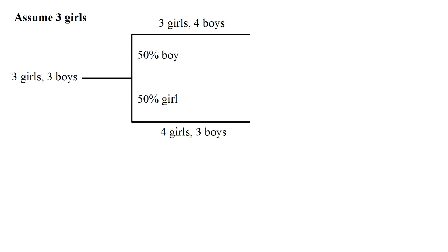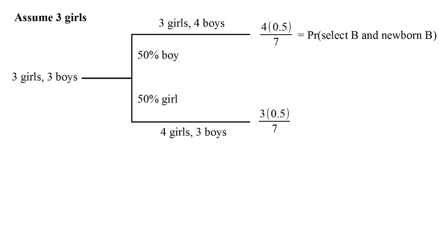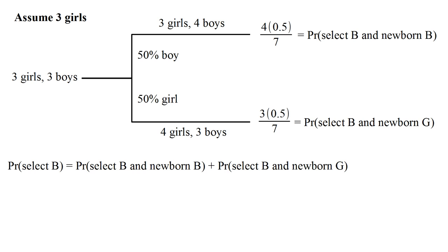So what's the probability of selecting a boy in each case? In the top branch, there are four boys out of seven children total — a four out of seven chance — and we multiply that by the 50% chance of being in this branch. This is the probability of selecting a boy and having the newborn child be a boy. In the bottom branch, there are three boys out of seven children, multiplied by the 50% chance that the child born was a girl. So the total probability of selecting a boy is the sum of these two probabilities, equal to three and a half divided by seven — a 50% chance.